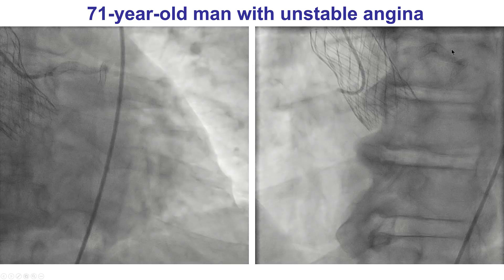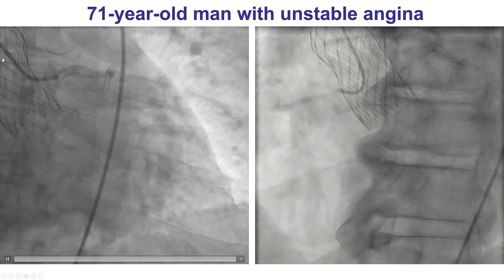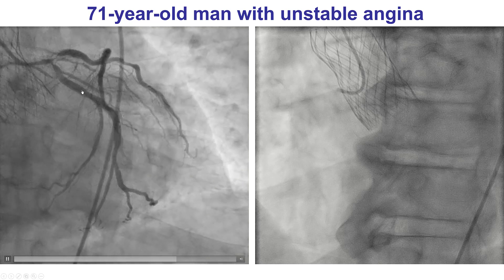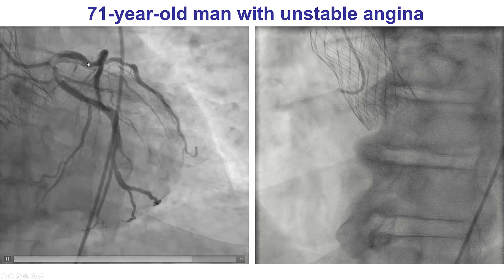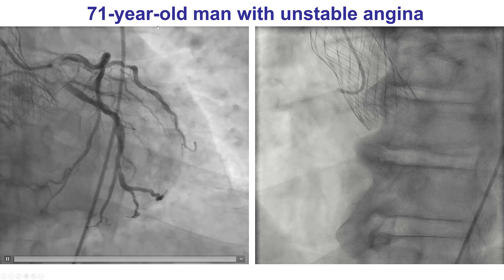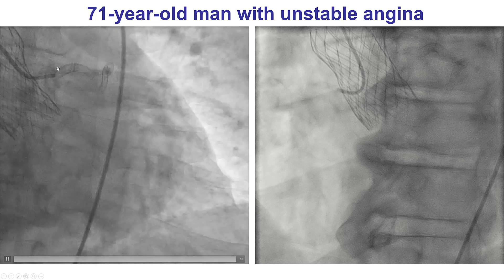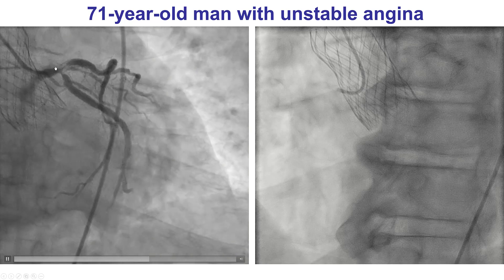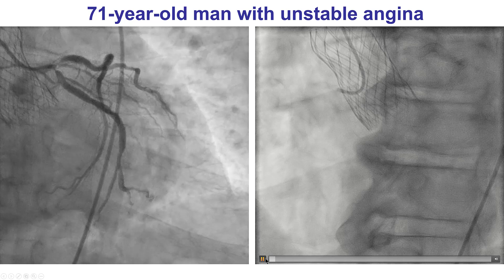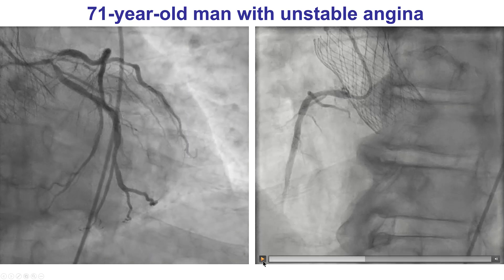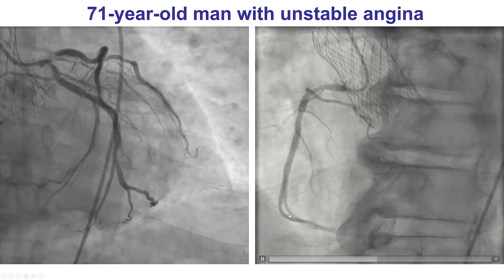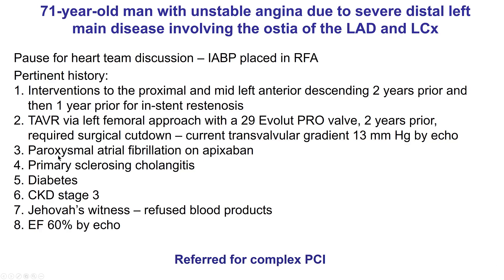The patient was a 71-year-old gentleman with a previous TAVR with a 29-millimeter CoreValve. He also had percutaneous coronary intervention of the LAD twice, so there are two layers of stents. He presented with unstable angina and was found to have significant in-stent restenosis of the ostium of the LAD, distal left main, as well as the ostium of the circumflex, whereas there was no significant disease in the right coronary artery. The patient had multiple comorbidities and was turned down for coronary bypass graft surgery. He had an intra-aortic balloon pump placed in the right femoral artery and was referred for complex percutaneous coronary intervention.